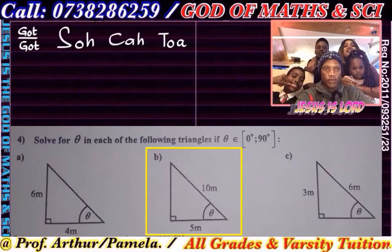Now we look at alphabet B, so we're gonna write B. We need to identify what is opposite to this theta — this side is the opposite, this is the hypotenuse, this one here is the adjacent.